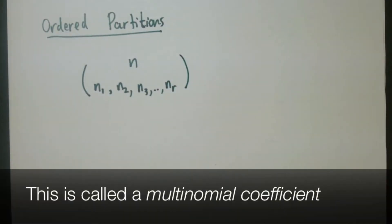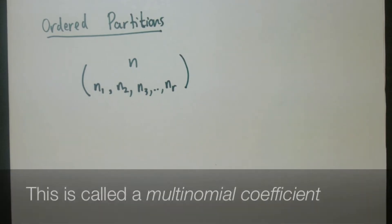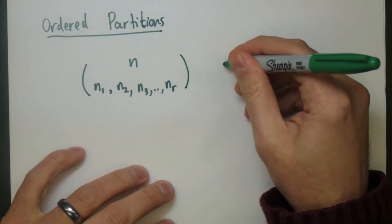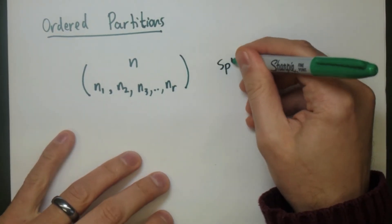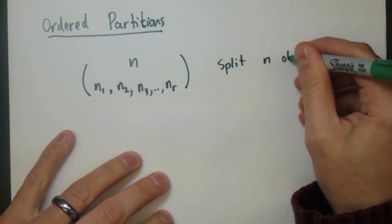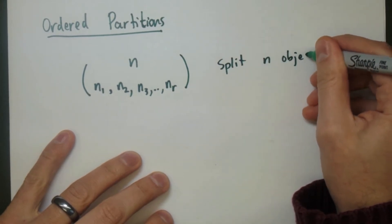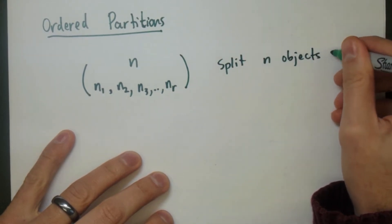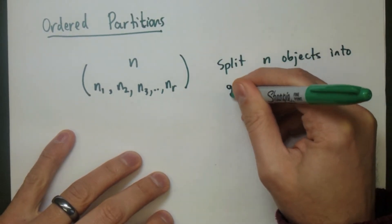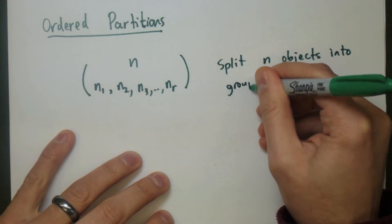A partition is a way of taking a set and splitting it up into different parts. An ordered partition is a partition where we're taking the elements of our set and breaking them up into different groups of different sizes, and the different groups are actually different from each other.